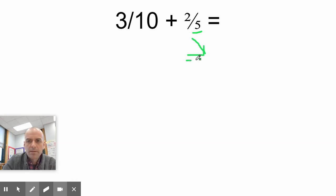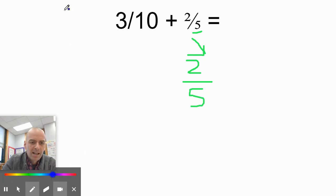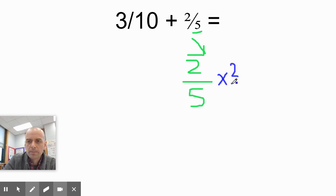I'm going to take two fifths and I'm going to multiply it. How many times do I have to multiply it to get tenths? Five, ten. Two times. So I'm going to multiply two fifths by two over two. And then I just multiply straight across. So two times two is four. Five times two is ten.